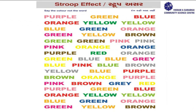Now there is one test. What you have to do is tell the colors, not the words. So you don't have to read it as purple, green, blue, orange, yellow, yellow, blue — but you have to read it as pink, orange, red, red, dark green, light green, orange, blue, like that.